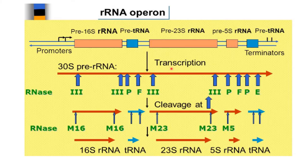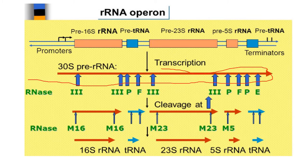In prokaryotes, a long precursor ribosomal RNA is synthesized. This long precursor RNA gives rise to different species: 16S ribosomal RNA, tRNA, 23S ribosomal RNA, 5S ribosomal RNA, and different types of tRNA. The processing involves first transcription from the transcriptional unit present on DNA, which contains the promoter region, terminator region, and intervening sequences.